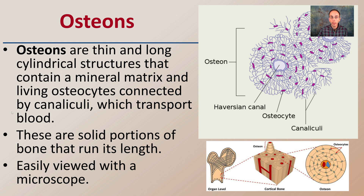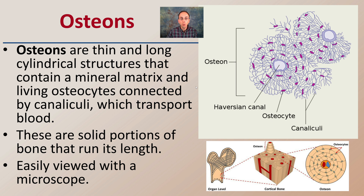These osteons are thin and long cylindrical structures that contain mineral matrix and living osteocytes connected to the canaliculi, which transport blood. These are solid portions of the bone and run its length, and are easily viewed with a microscope, which is why they tend to be used as part of this calculation process. You can see them represented in the diagram and quite clearly in the microscope images.